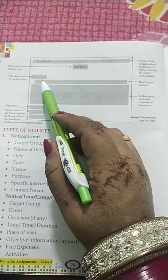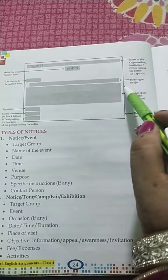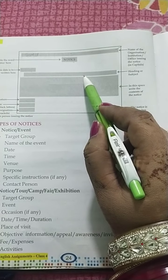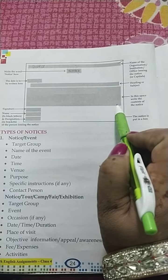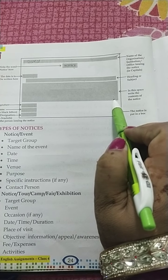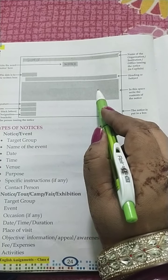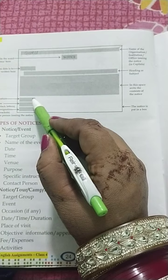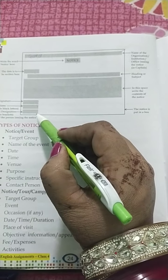After that, mention the date and heading or subject. In the content area, write the content of the notice — जिस topic के बारे में लिखना है, वो 50 words में लिखें। After that, write the signature and name in block letters.